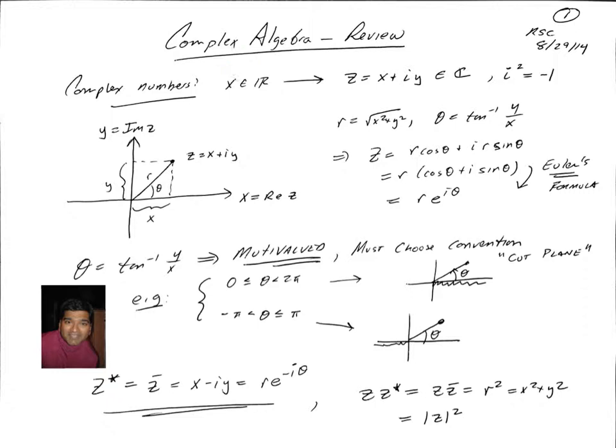For any real number x, which is an element of the reals, we can generalize it to an element z, which is x plus iy, where x and y are real numbers and i is the square root of minus 1. Such a complex number z is an element of the complex numbers, we use the symbol capital C to represent the complex numbers.